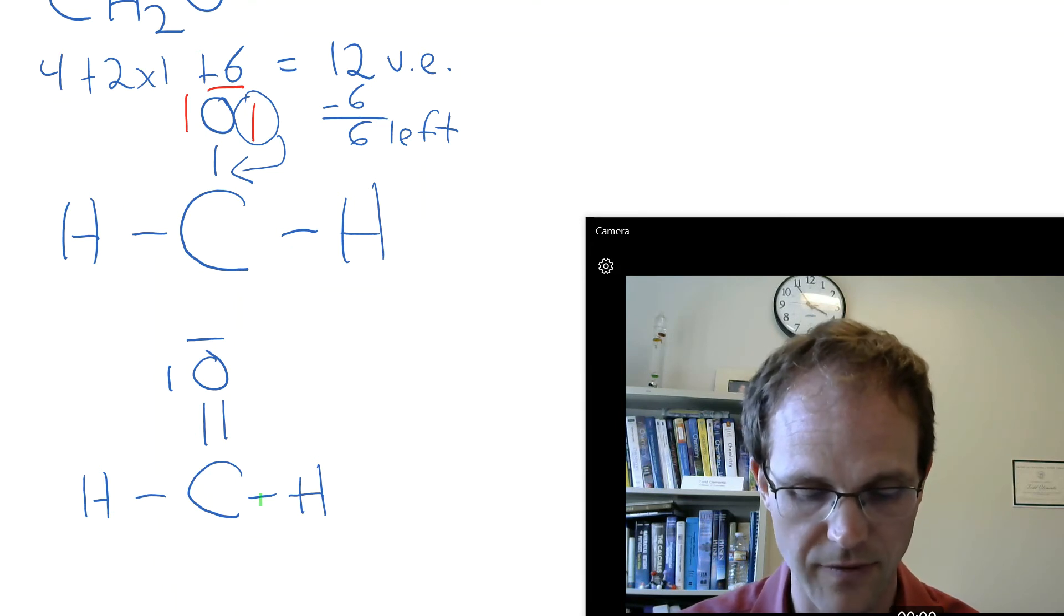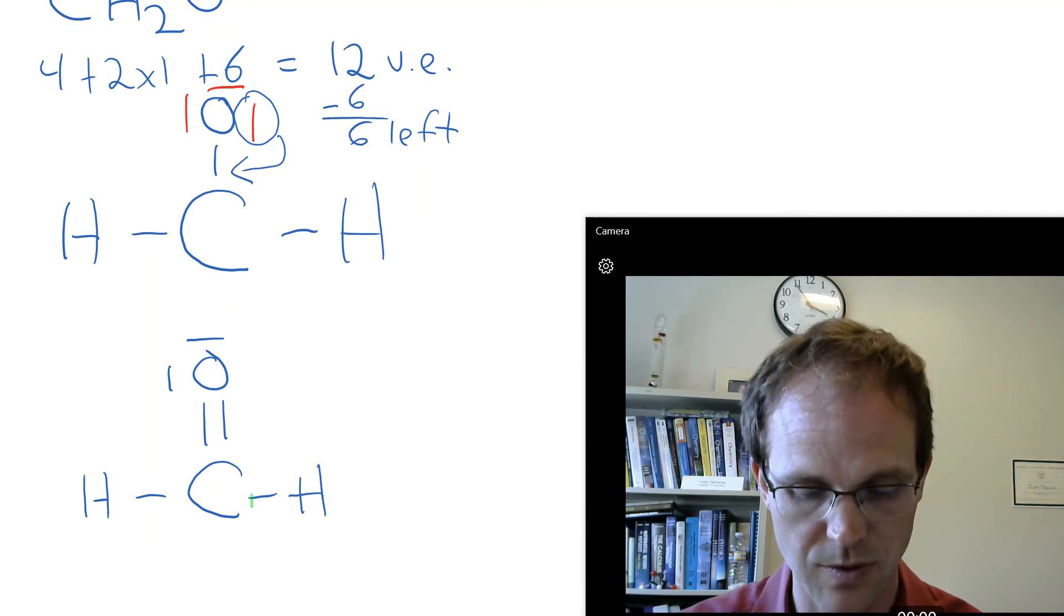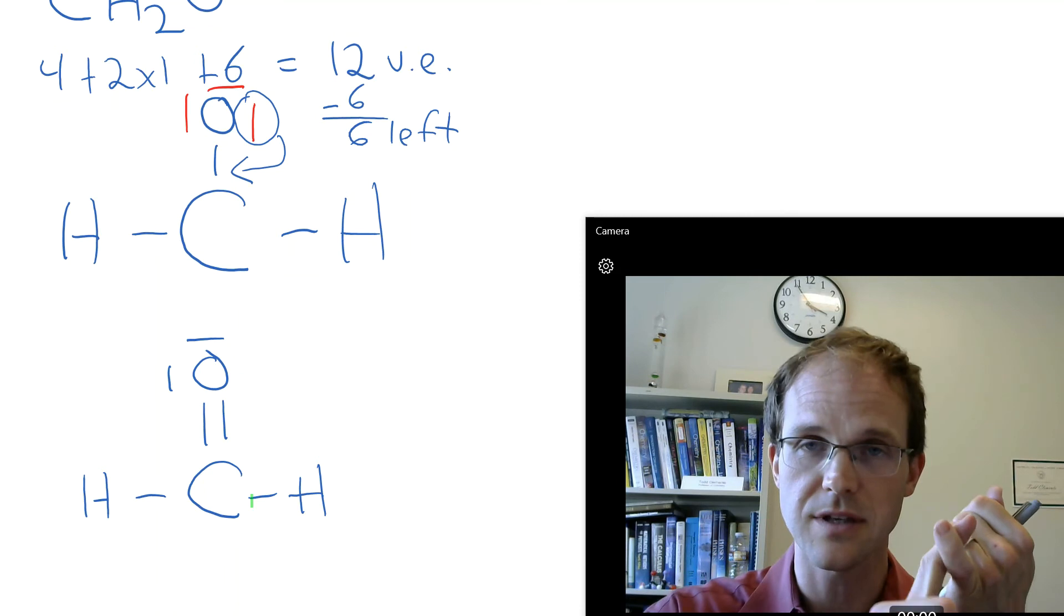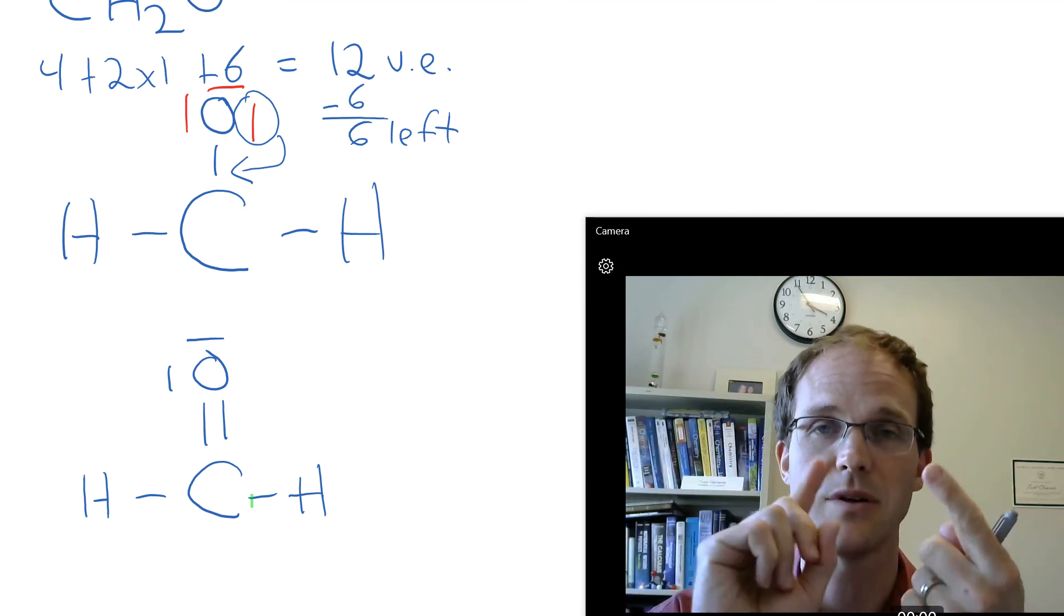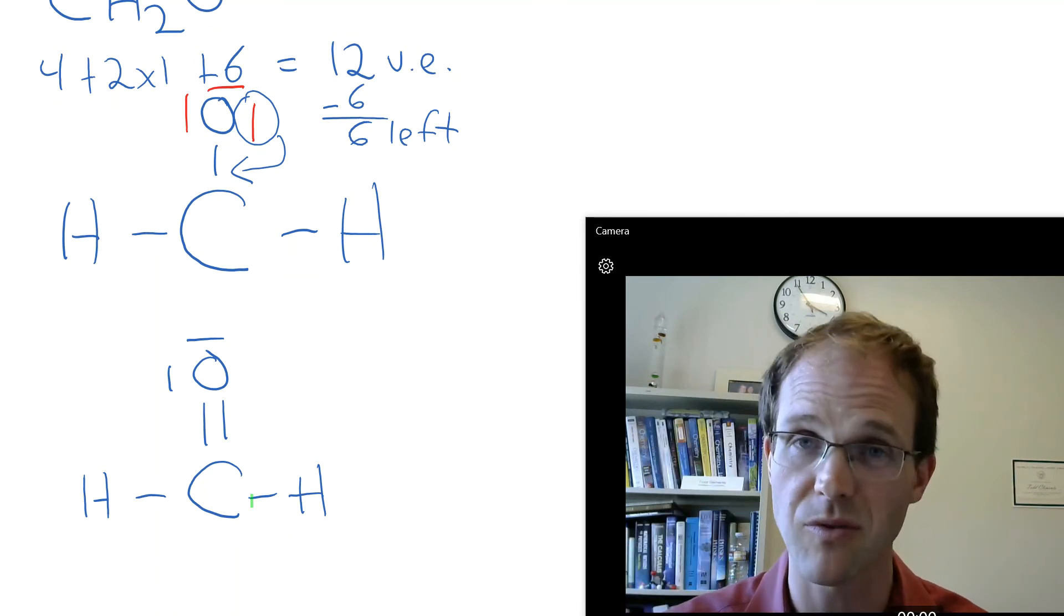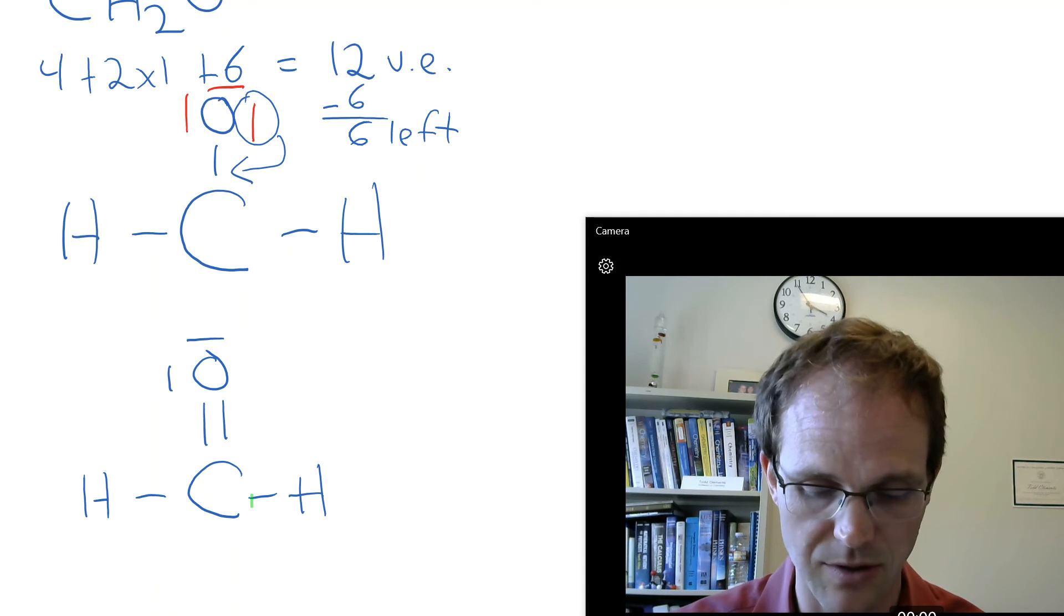Do we have the right number of valence electrons? 2, 4, 6, 8, 10, 12. Cool. Right number of valence electrons. Everybody's happy. We did the rules in order, we can't be wrong, and that's actually what that molecule looks like.